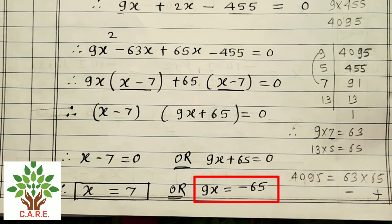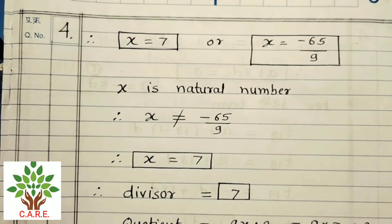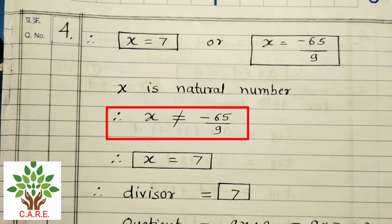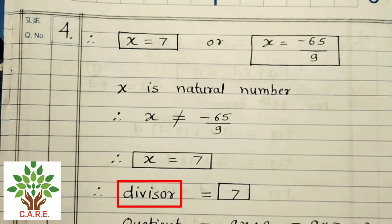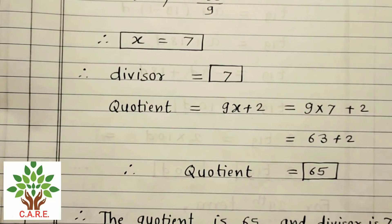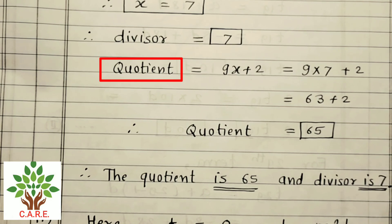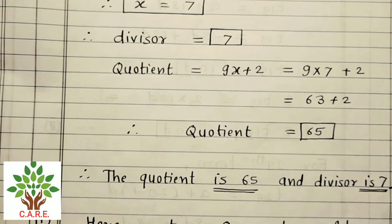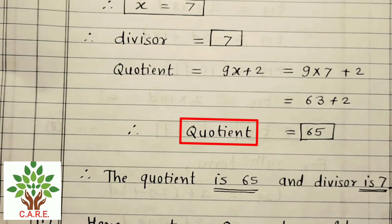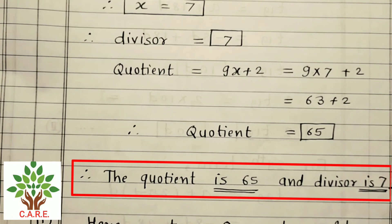Therefore x = 7, or 9x = −65 so x = −65/9. Since x is a natural number, x ≠ −65/9. Therefore x = 7, so the divisor = 7. Quotient = 9x + 2 = 9(7) + 2 = 63 + 2 = 65. Therefore the quotient is 65 and the divisor is 7.